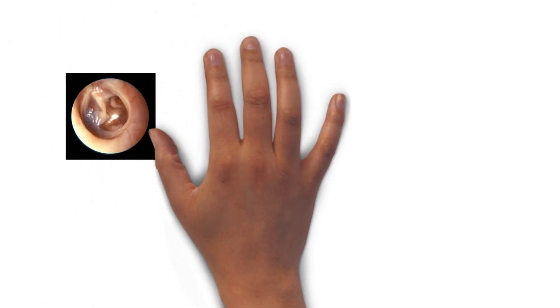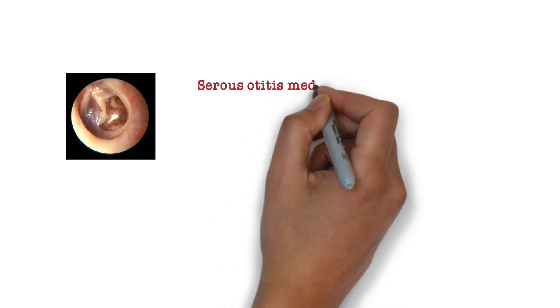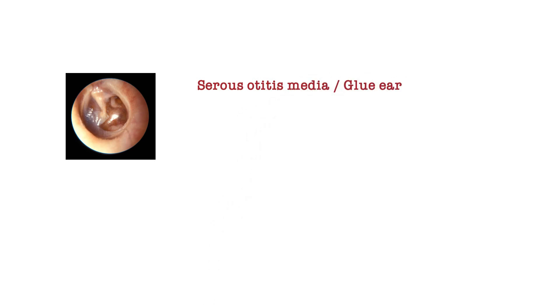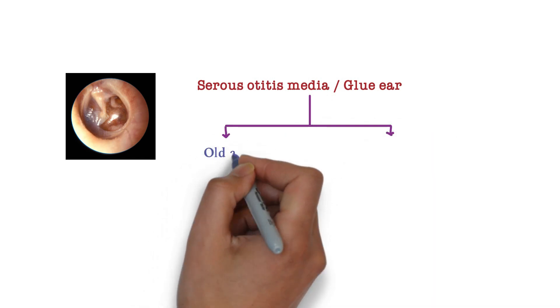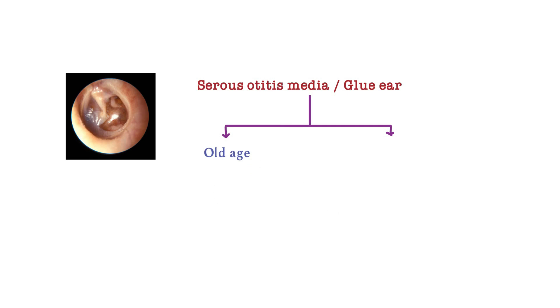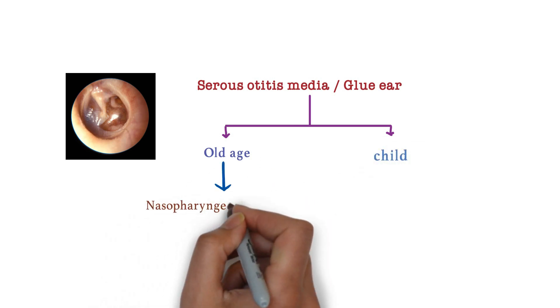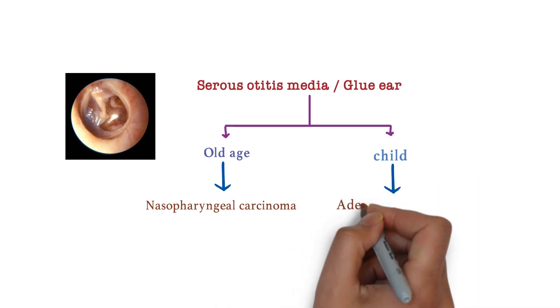What is the buzzword here? The buzzword is serous otitis media. Look over here — this is the image of serous otitis media. If you see serous otitis media in the question, there should be two options in your mind. First, we should look for age — whether it is old age or a child. In old age, the cause is nasopharyngeal carcinoma, and in childhood, the cause is adenoid hypertrophy.